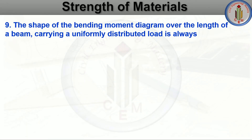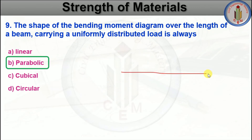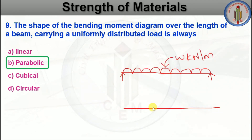The shape of the bending moment diagram over the length of a beam carrying a uniformly distributed load is always — linear, parabolic, cubical, or circular. The answer is parabolic. For a beam with UDL, drawing the bending moment diagram shows a parabolic shape.